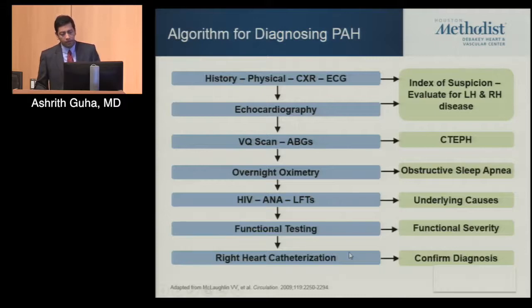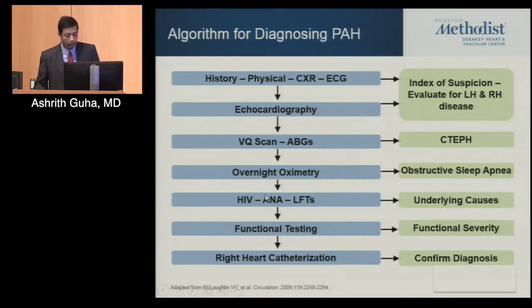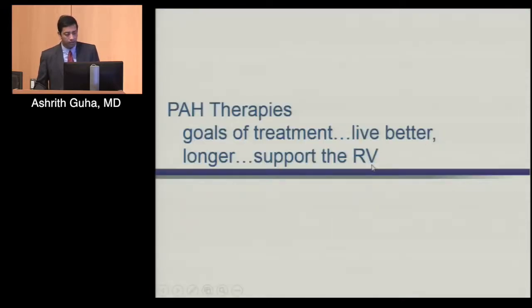This algorithm outlines what's needed to diagnose pulmonary arterial hypertension — mainly ruling out other conditions such as chronic thromboembolic pulmonary hypertension with a VQ scan, identifying other coexisting conditions that could strengthen suspicion of PAH, and doing a sleep study for obstructive sleep apnea.